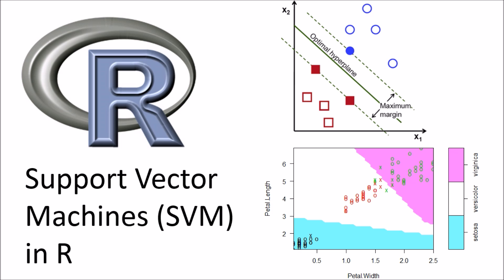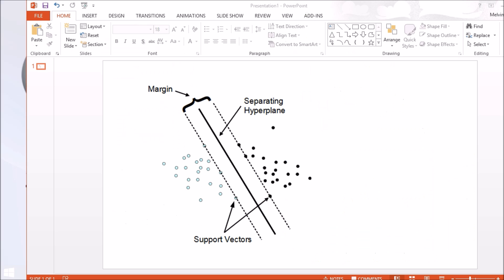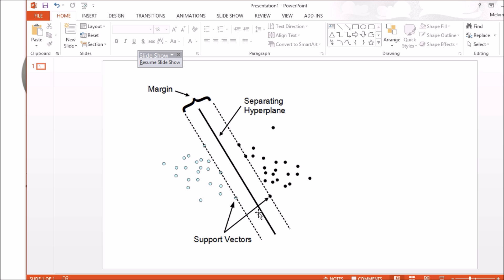The best way to explain how support vector machines work is with an illustration. I have a PowerPoint slide outlining what an SVM is. The basic idea: you have a number of observations that have been clearly labeled — some in blue and some in black. The objective is to draw a line that can split the two groups in the most optimal way. That's fundamentally how SVM works.